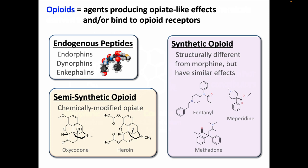Opioids are those agents that produce opiate-like effects and/or bind to opioid receptors. Opioids come in a few types. Since we have opioid receptors in our bodies, it makes sense that we'd have some endogenous substance that would bind to them — otherwise, why would such receptors develop and be retained through evolution? There are semi-synthetic opioids, which share the core chemical structure seen in the opiate analgesics and are typically made by chemically modifying opiate alkaloids, some examples being oxycodone and heroin. And there are also synthetic opioids, which are structurally different from morphine but bind to opioid receptors and have similar effects, such as fentanyl, meperidine, and methadone.